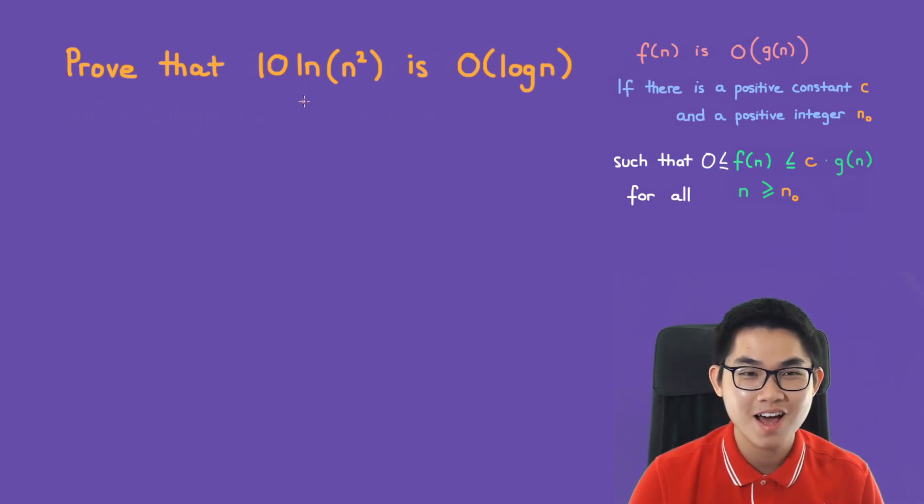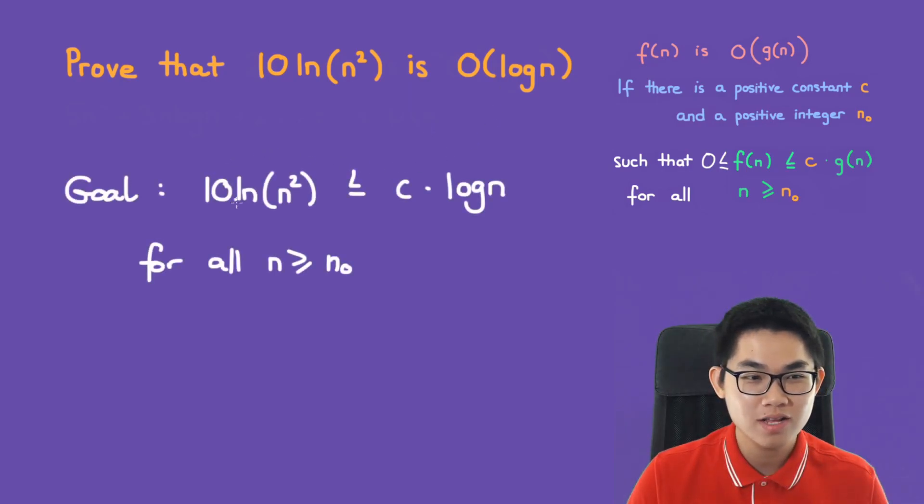Prove that 10 times the ln of n squared is O log n. So our goal is to find a C and an n naught such that this inequality is always true.